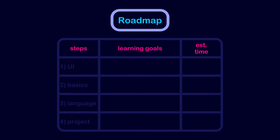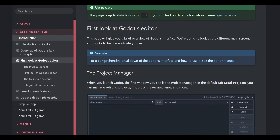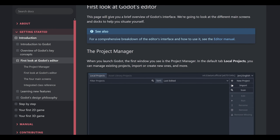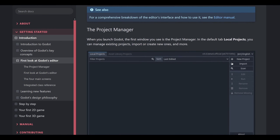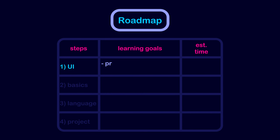The very first step I recommend after downloading the engine is to get familiar with the UI. You can watch any introduction video about Godot or read the 'First Look at Godot's Editor' page in the Getting Started section of the documentation. By the end of this step, you should know how to use the project manager and the different screens like the scripting screen or the 2D screen — in general, you should be able to navigate through Godot's UI. This step should take you roughly less than 1 hour.